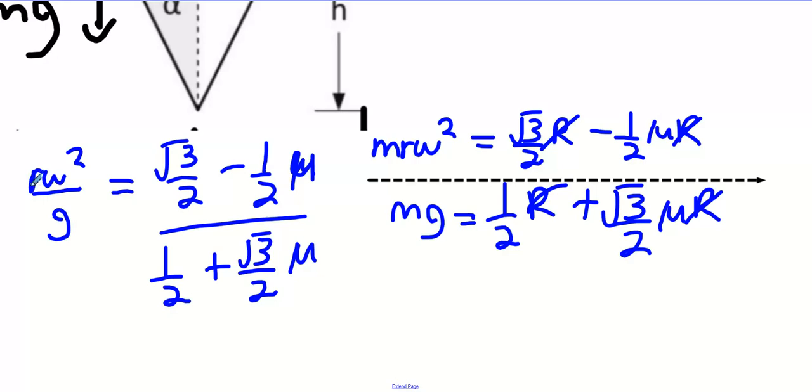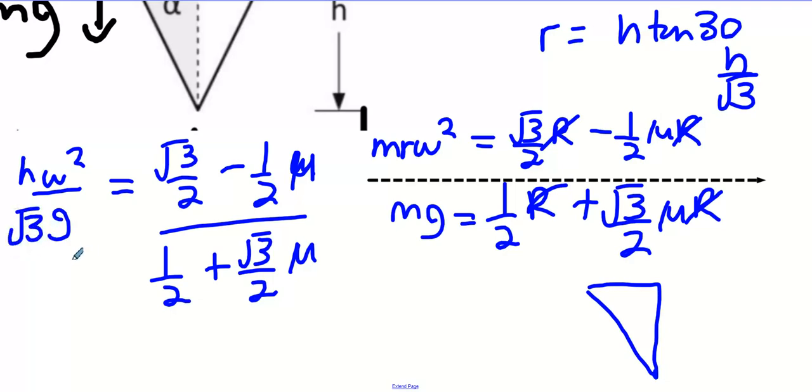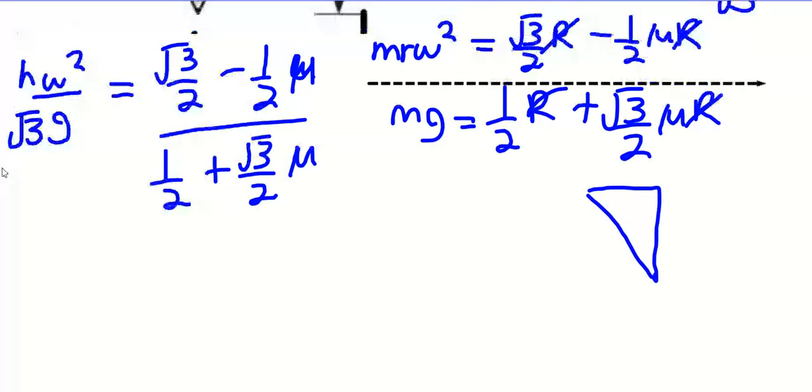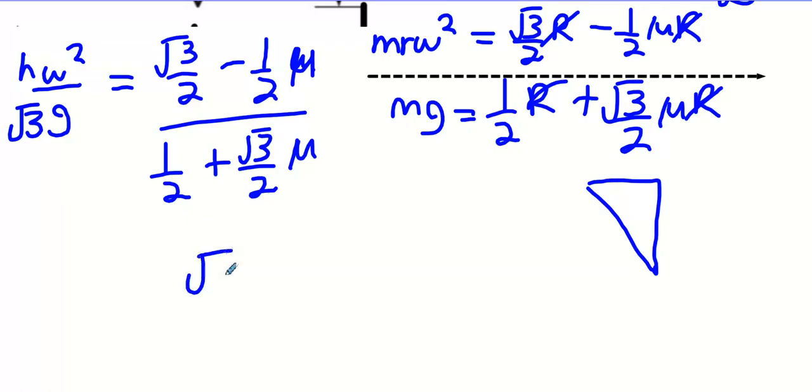First thing I'm going to need to do is get rid of that R. Any suggestions? H tan alpha? Yeah. And what is tan alpha at the moment? Tan 30. What is tan 30? 1 over root 3. So, what I can change this to is H all over root 3. Is that right? Now, before I do anything else, I'm going to give these a common denominator. So, it's root 3 minus 1 mu all over 2. And what's the bottom one? It's 1 plus root 3 mu all over 2. But when you divide by a fraction, you can bring it to the top and flip it.